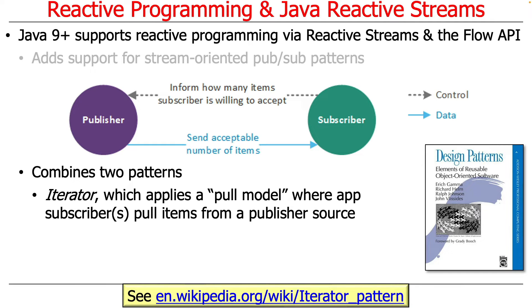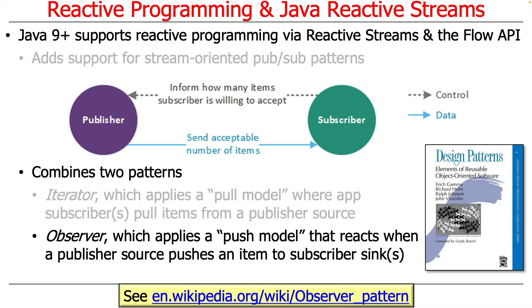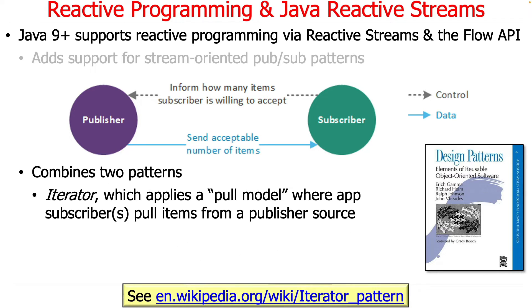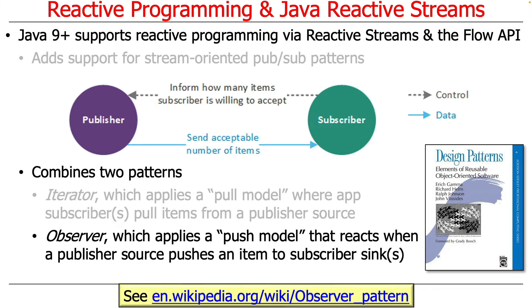There are two patterns relevant here. One is the iterator pattern, which applies a pull model where app subscribers pull items from a publisher — basically specifying how many items they can accept before they need to wait, do some processing, and then come back for the next tranche. The other is the observer pattern, which applies a push model where a subscriber reacts when a publisher pushes items to subscriber sinks.